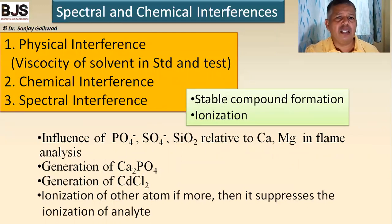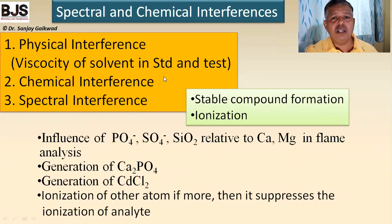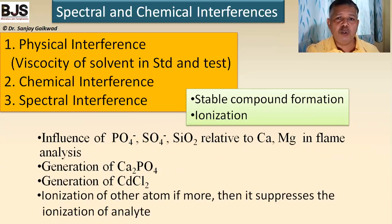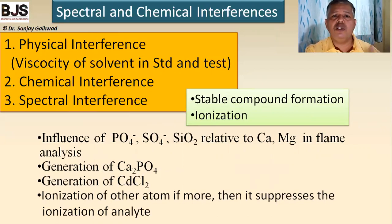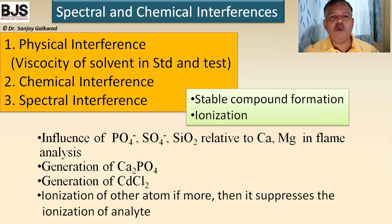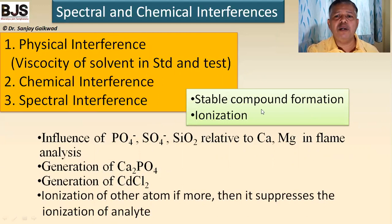There are several types of interferences: physical interferences, chemical interferences, and spectral interferences. For physical interferences, the viscosity of the solvent affects measurement — the viscosity for both standard and test solutions must be known. Additionally, flame temperature must be kept constant throughout the entire analysis, as flame temperature variation is a physical interference.